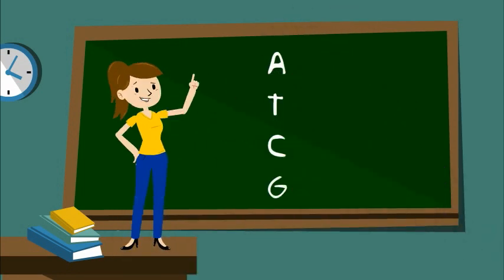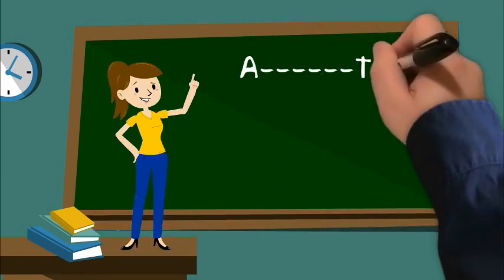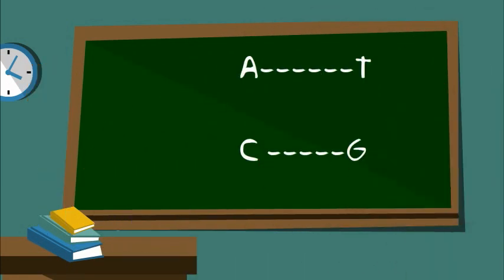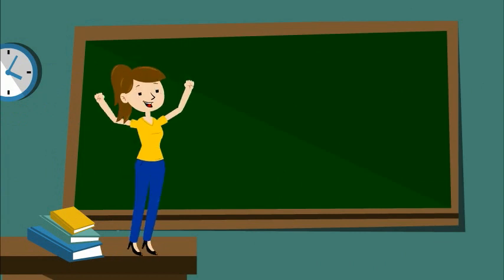A and T are always bonded together, and C and G are always bonded together. The two groups are best friends. They always want to be together, just like you and your best friend.